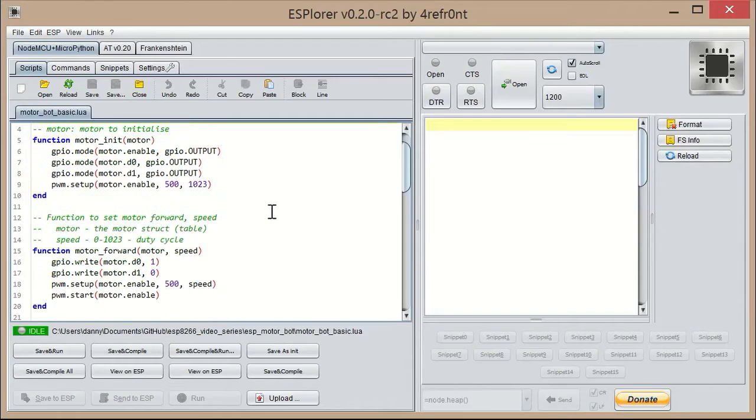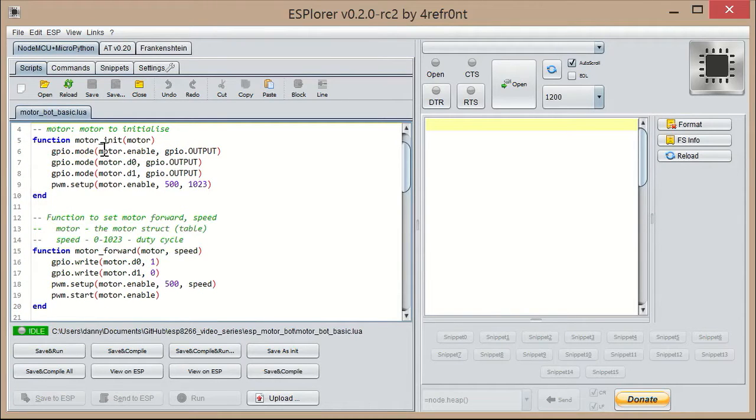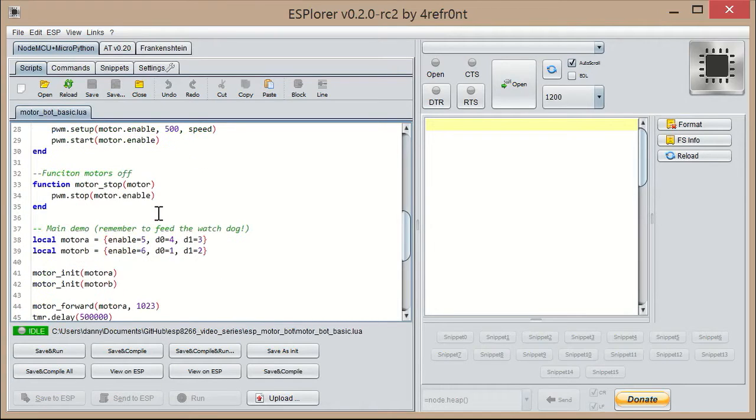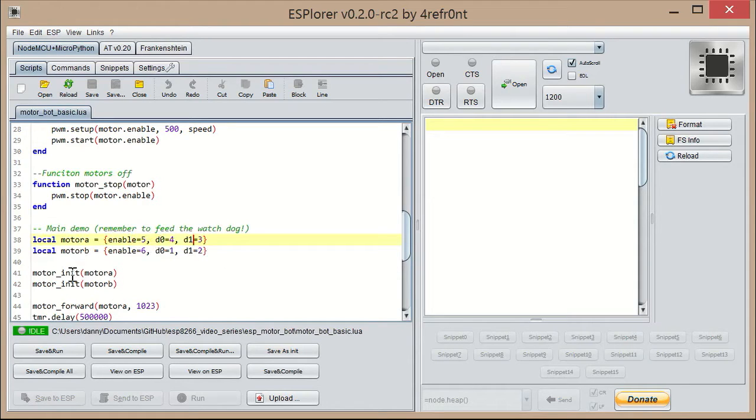The first thing I've got here is I've actually set a bunch of functions for initializing, going forward and backwards on a motor and stopping. And I've stuck the motors into two little structures where I can say what the enable, direction zero and direction one pins are, and you'll see how those are used.